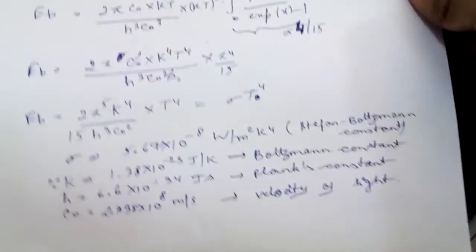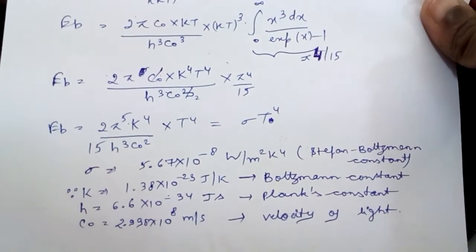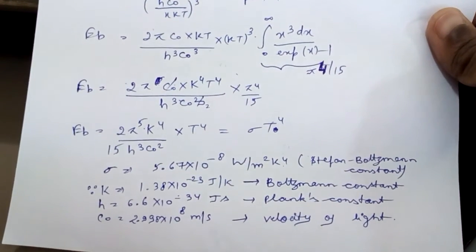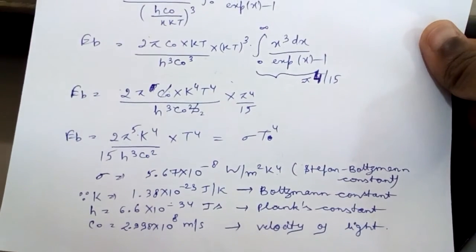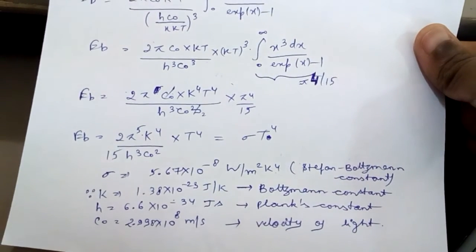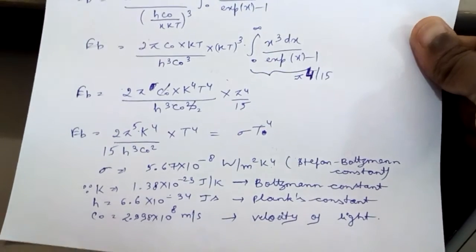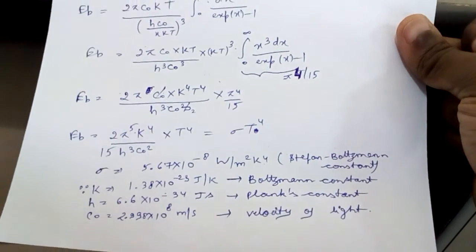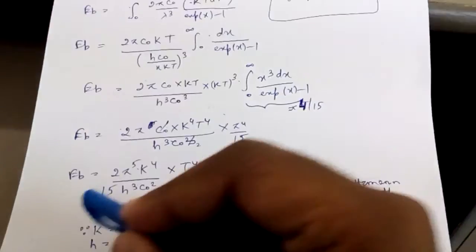So our answer is eb = 2πc₀ · (kT)⁴/(h³c₀³) × π⁴/15. In the numerator there is c₀ and in the denominator c₀³, so c₀² remains in the denominator. Therefore eb = 2π⁵k⁴/(15h³c₀²) × T⁴. This constant 2π⁵k⁴/(15h³c₀²), after solving, equals 5.67 × 10⁻⁸ W·m⁻²·K⁻⁴, which is known as the Stefan-Boltzmann constant σ.